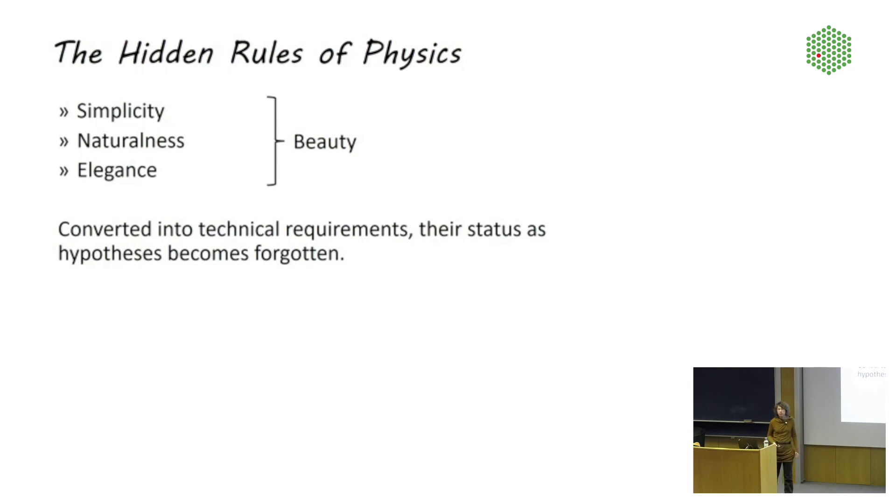Those are criteria that pretty much everyone is currently using in the foundations of physics if they have to select a theory, but no one really talks about it. Instead, what has happened is that those criteria have become converted into technical requirements, particularly obvious when it comes to technical naturalness. And their status as hypothesis has become forgotten. And this is why my book is called Lost in Math, because those are really philosophical principles. I call them aesthetic principles or aesthetic arguments. Other people have told me that I should call it metaphysical arguments or maybe just beliefs, whatever you want to call it. The point is that those are additional requirements that are not based on evidence that theoretical physicists are using to select hypothesis.